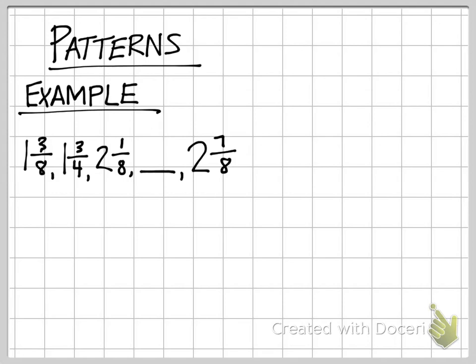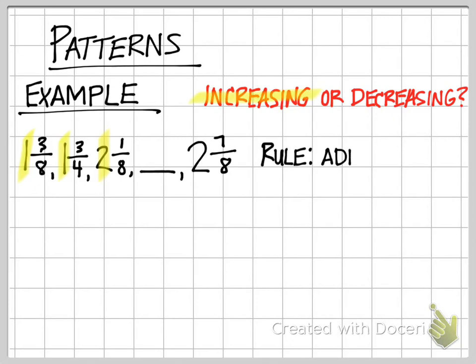The first thing you need to do is decide if the pattern is increasing or decreasing. The easiest way to look at this problem is to look at the whole number. I notice that I start with a whole number of one and then it goes up to a whole number of two. So I know that this pattern is increasing, so my rule is automatically to add.